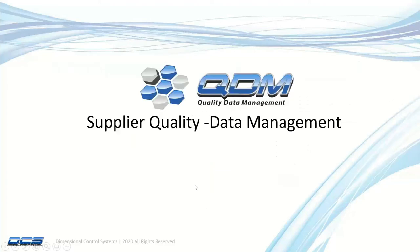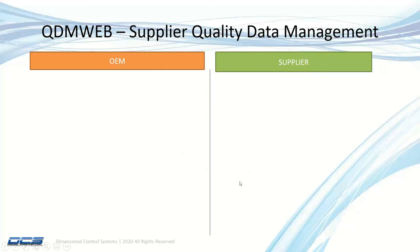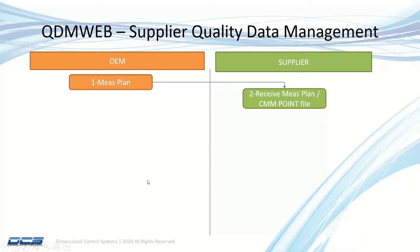Let's start with supplier quality data management. This covers dimensional data, engineering data — features, measurements, tolerances, GD&Ts, and all dimensional measurements. The flow begins with the measurement plan, which is designed by the OEM. The OEM decides what features on a particular component, such as a bracket, need to be measured, and what naming conventions to use for those points. That measurement roadmap is then provided to the supplier via QDM web — the blue line connecting both user bases. The supplier receives the measurement plan and a CMM point file, an electronic format they can use to create measurement routines on whatever measuring equipment they have.